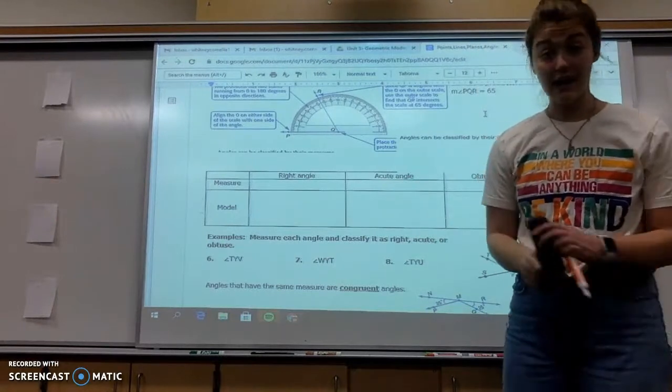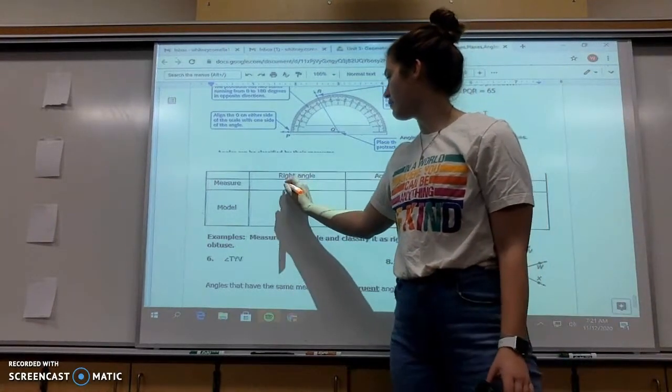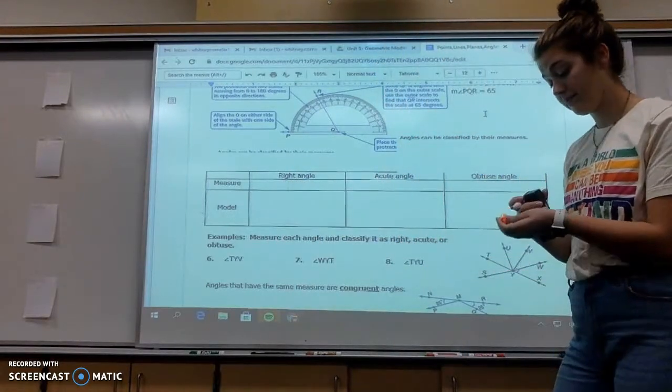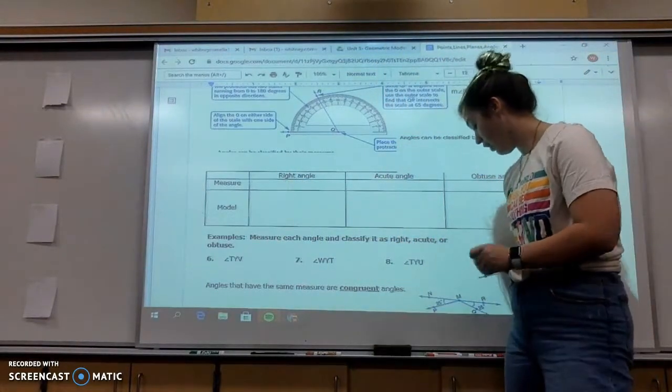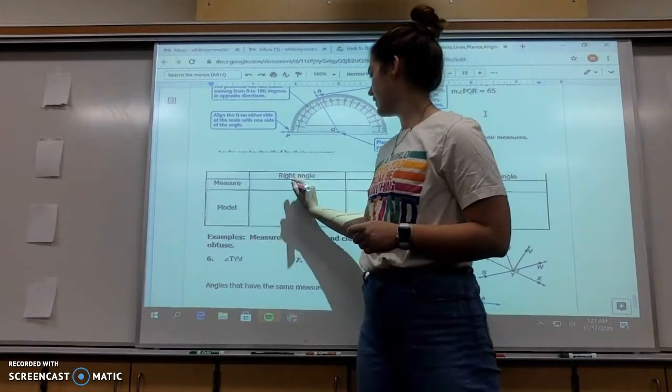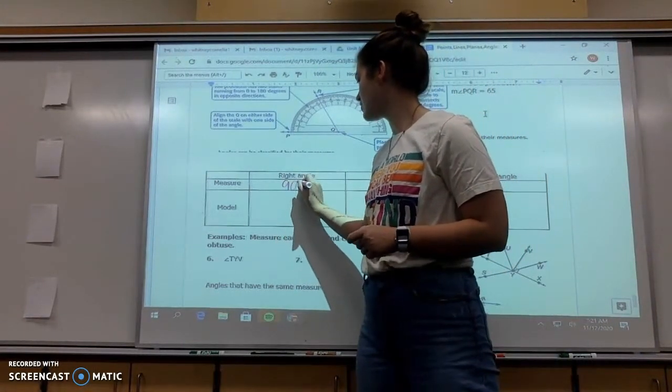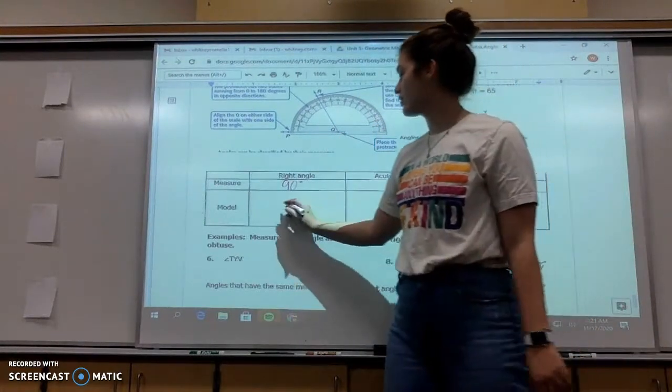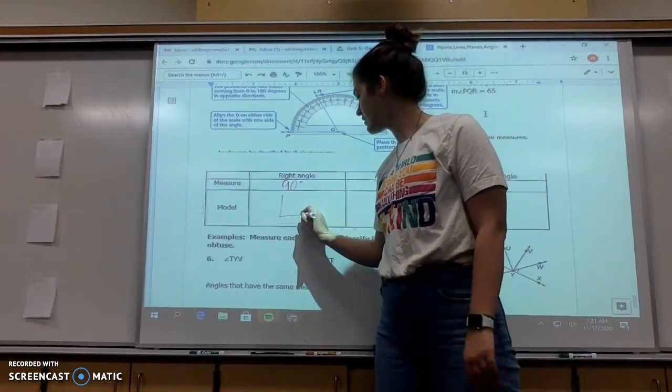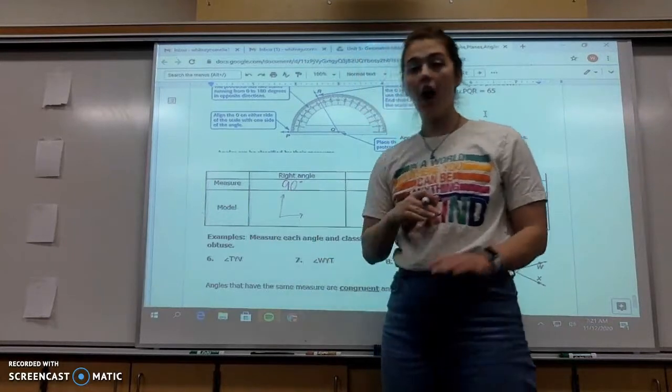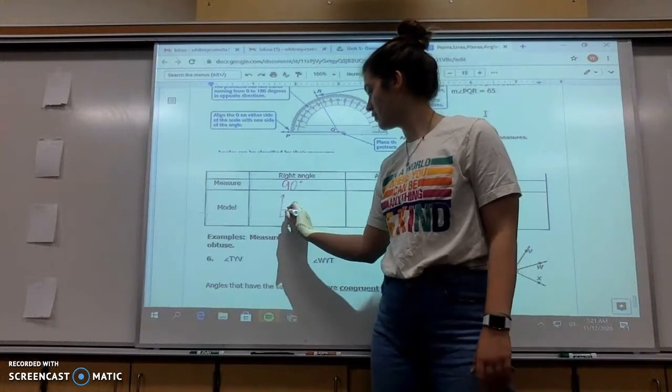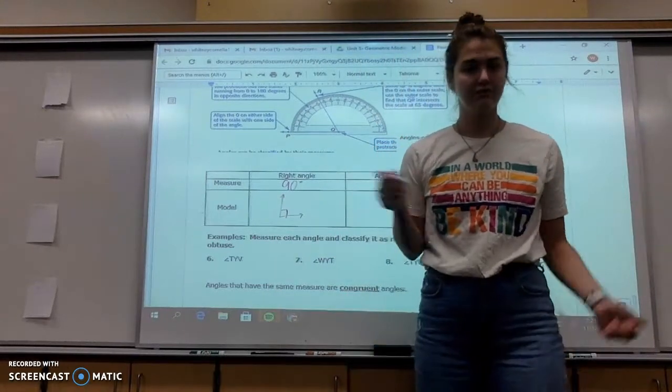So we have different angles that can be classified by their names. The first one is a right angle. The right angle measure is always 90 degrees. 90 exactly. And it looks something like this. We always denote right angles with a little box in the corner.